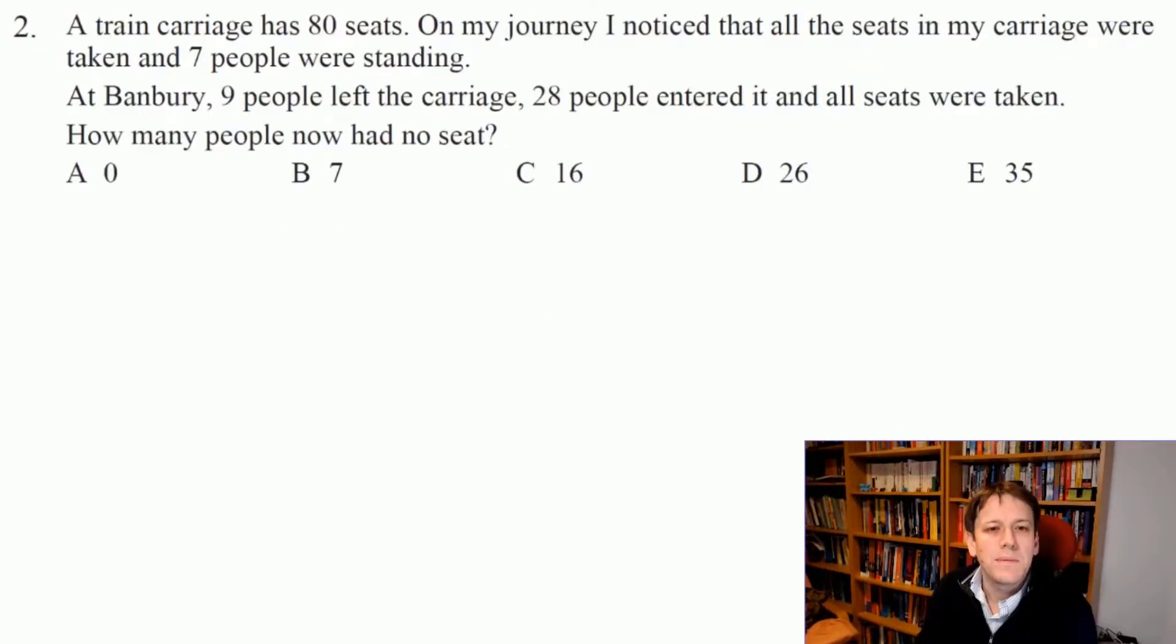There were 7 people standing before 9 people leave the carriage. At that point all those 7 people can sit down and there will be 2 spare seats. So when 28 people get on, two of them can take the spare seats and there will be 28 minus 2, which is 26, who will have to stand.